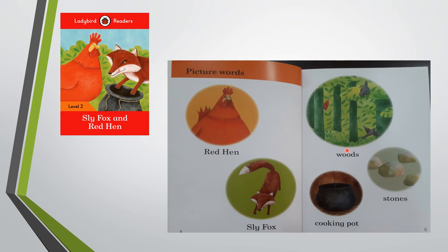Words: woods, stones, cooking pot. Let's repeat the words — red hen, sly fox, woods, stones, cooking pot. Children, you have to learn these words and prepare for the dictation.